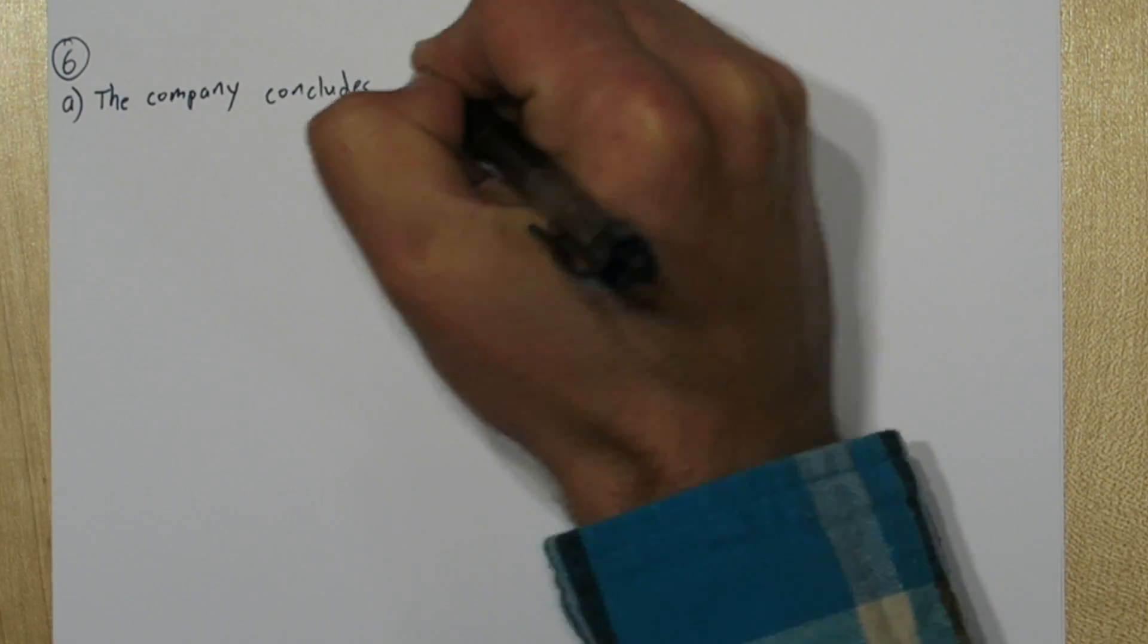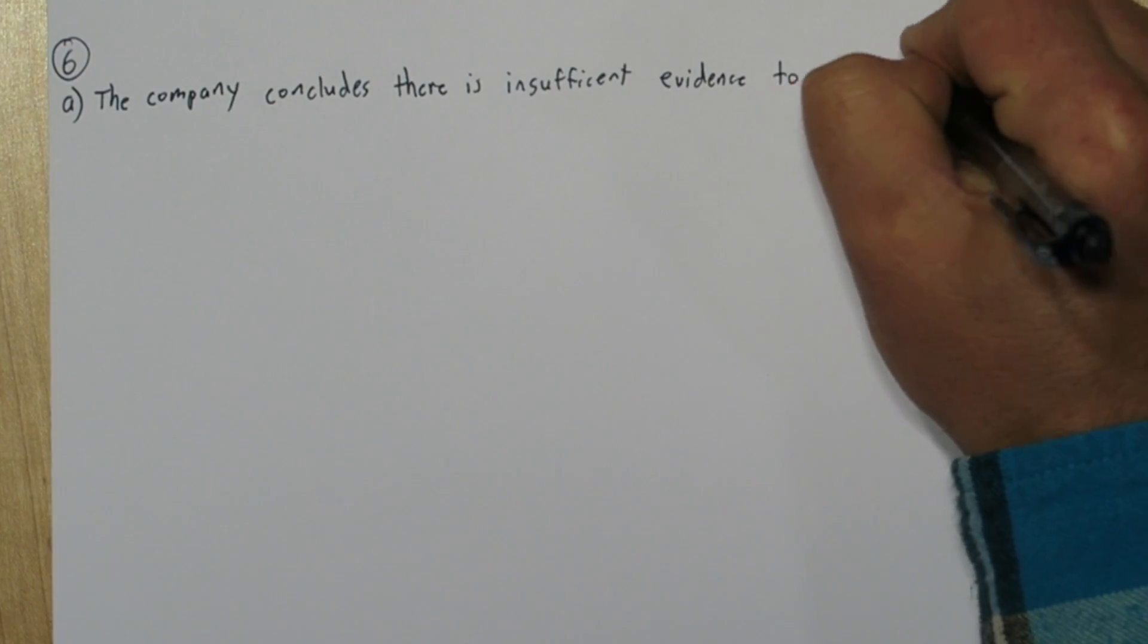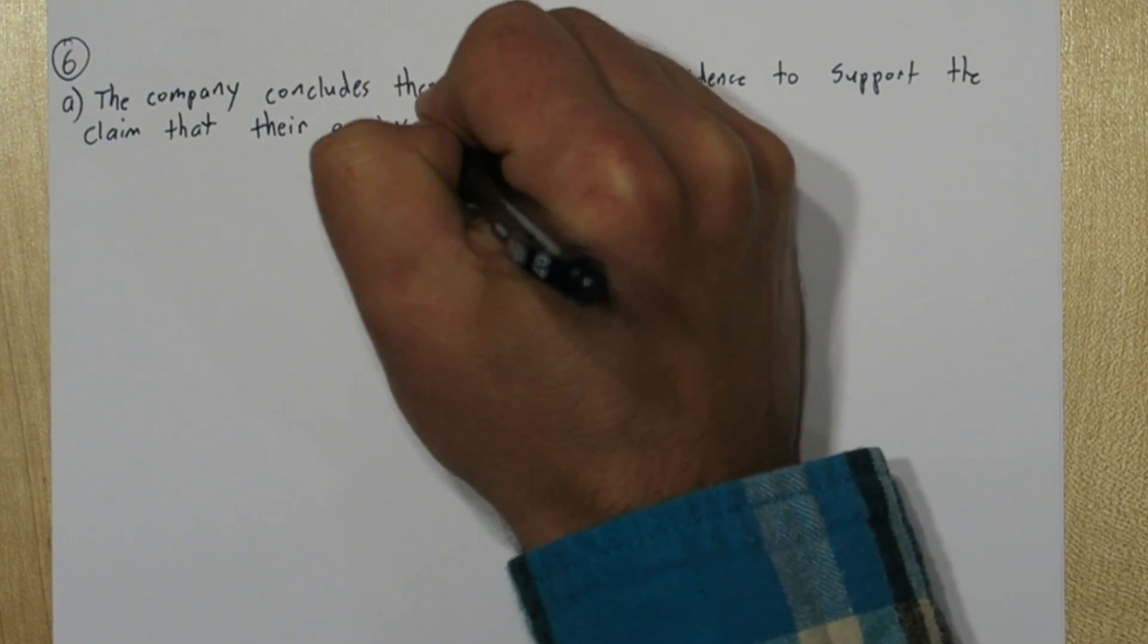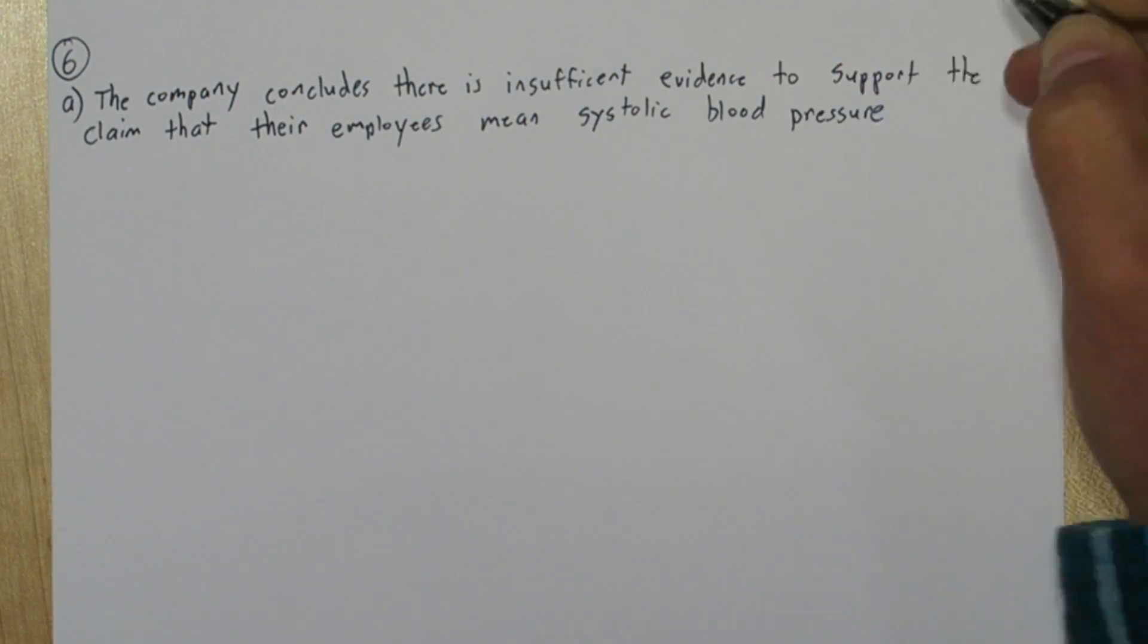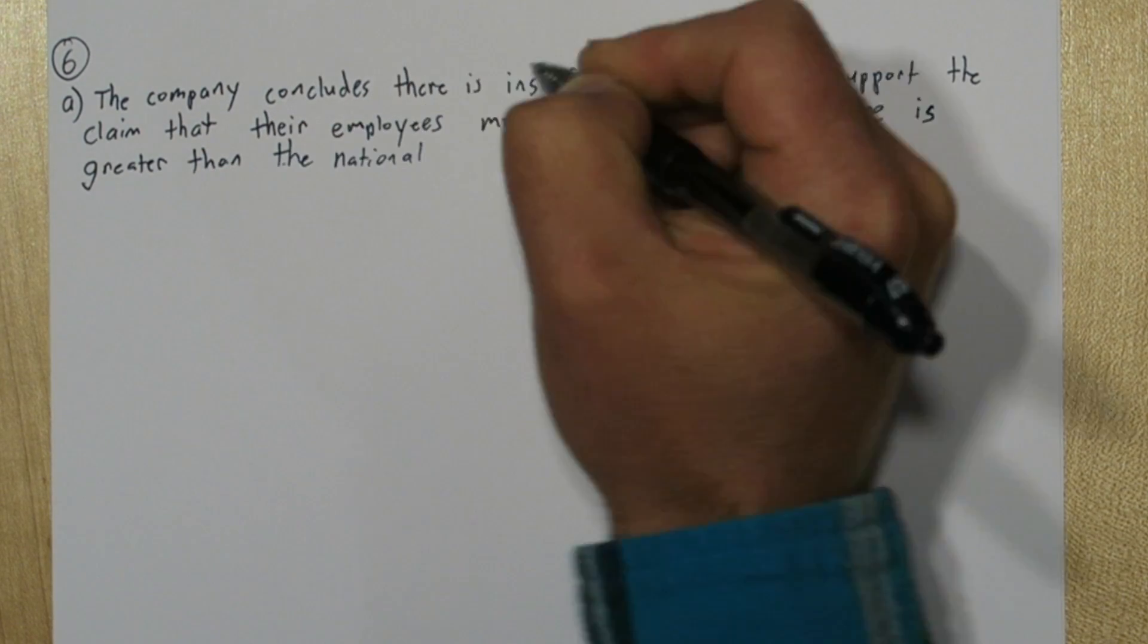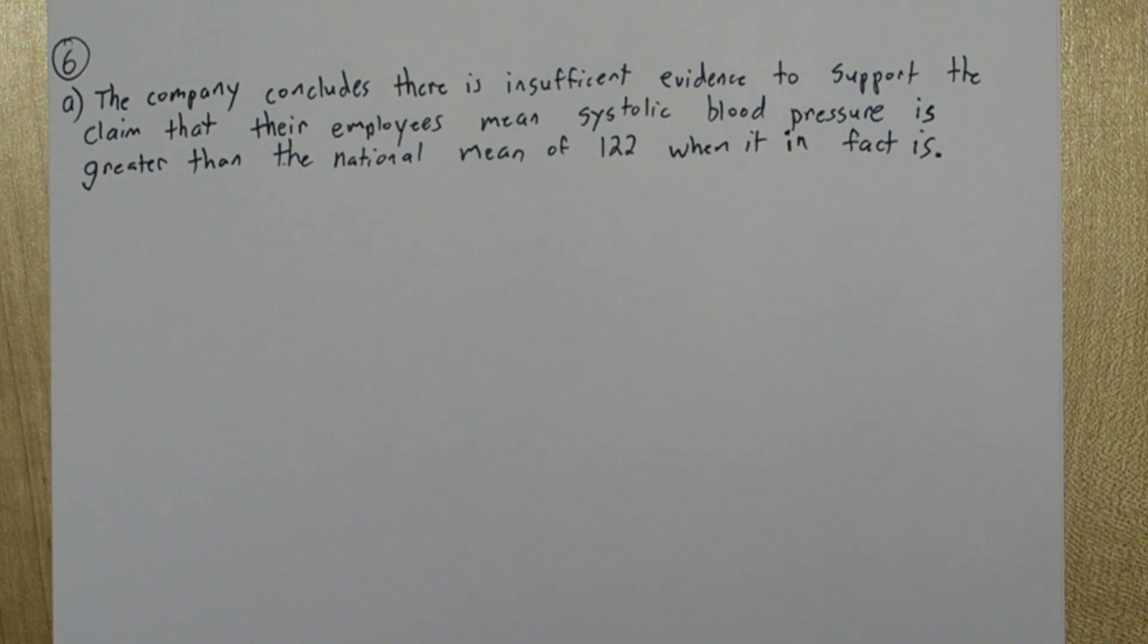A type 2 error is a missed opportunity to make an interesting conclusion. So in this case, it would be the company concludes there is insufficient evidence to support the claim that their employees' mean systolic blood pressure is greater than the national mean of 122 when it in fact is.